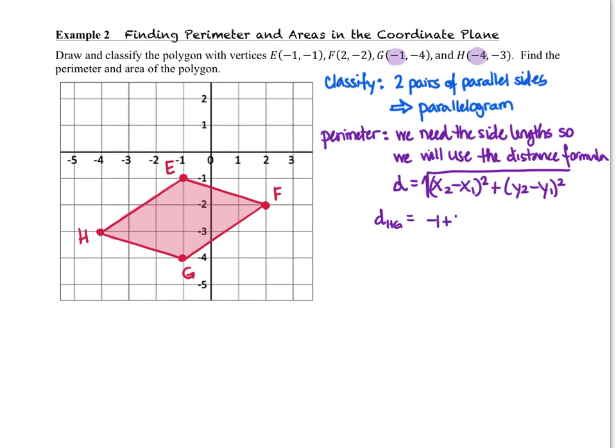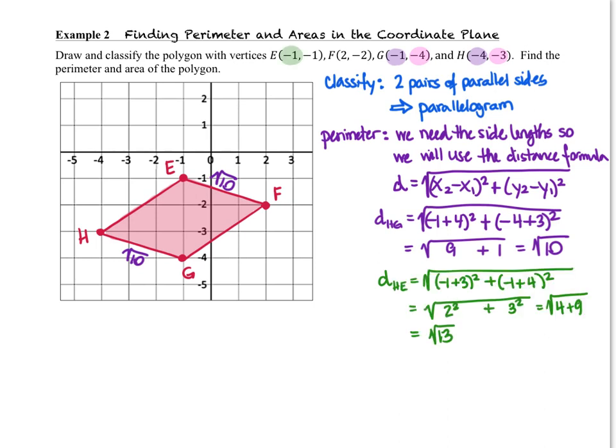So negative 1 minus negative 4 turns into a negative 1 plus 4. We're going to square that. And then our y's, we will plug in as negative 4 minus negative 3. Remember that we are taking the square root of whatever we end up with. So we're going to have negative 1 plus 4 is 3. 3 squared is 9, and that's going to be added to negative 4 plus 3, which is negative 1 squared, is 1. So this is going to be the square root of 10, and that's as simplified as that one can get. Just a reminder that segment HG is the same length as segment EF, so we now have 2 of the side lengths. Now it's time to use the distance formula again to find the lengths of the other two sides. So pause the video and practice using the distance formula. Turn the video back on when you have an answer.